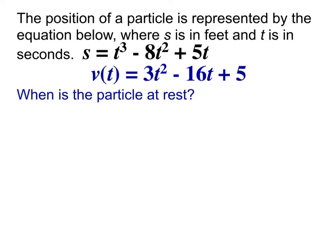Next up: when is this particular particle at rest? Well, what would it mean for it to be at rest? It would mean the velocity would be zero, because at rest means it's stopped — it's not moving at all. So if we want to figure out where this is at rest, we've got to figure out where the velocity function equals zero. Please do so — you set the whole equation equal to zero, and then you notice you have a quadratic set equal to zero that you're solving.